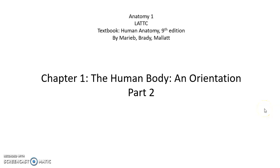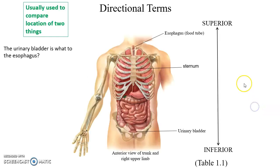Chapter 1: The Human Body and Orientation, Part 2. When we are comparing the location of two different structures in the body, we first assume the person is in the anatomical position.